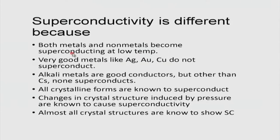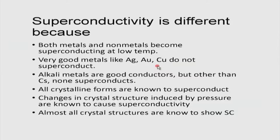Superconductivity is an altogether different phenomenon. Some important features: both metals and non-metals can become superconducting — not only metals. Surprisingly, the best conductors like silver or gold are never superconducting, even at the lowest temperatures achieved so far. Alkali metals are good conductors, but other than cesium none of them actually superconduct. All crystalline forms — polycrystalline, single crystal, amorphous — are known to superconduct in various materials. A very important factor is that changes in crystal structure induced by pressure can induce superconductivity in many systems.